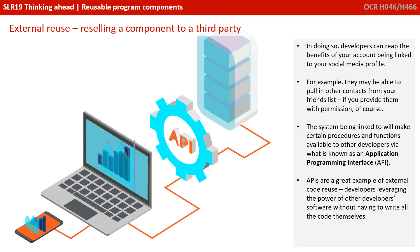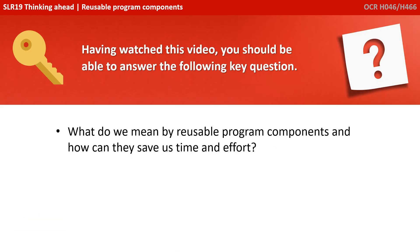APIs are a great example of external code reuse — developers leveraging the power of other developers' software without having to write the code themselves. Having watched this video, you should be able to answer the following key question: what do we mean by reusable program components, and how can they save us time and effort?